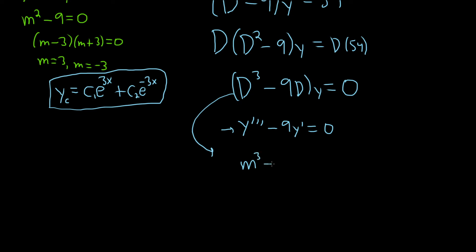Watch. m cubed minus 9m equals 0. You might be wondering, what are you doing? Why are you getting the characteristic equation again? It's because we can. We have a homogeneous DE. We know how to solve it by writing down the characteristic equation.